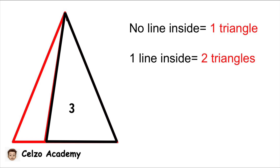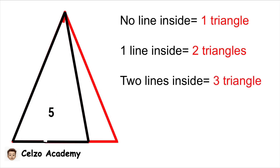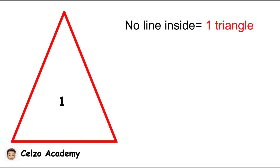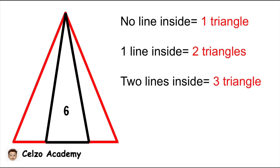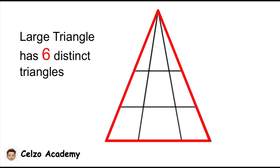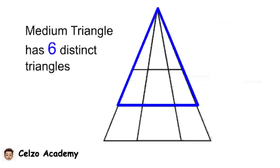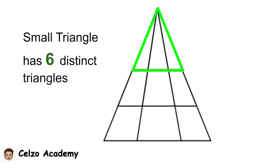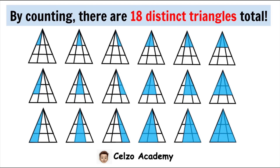What if there are two lines inside? We can form a fourth, fifth, and sixth triangle. So with two lines inside the triangle, there are six distinct triangles total. The same thing applies for the medium triangle and the small triangle — just like the large triangle, each will also have six distinct triangles. Therefore, there are 18 distinct triangles in this shape.